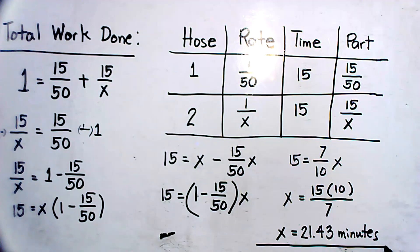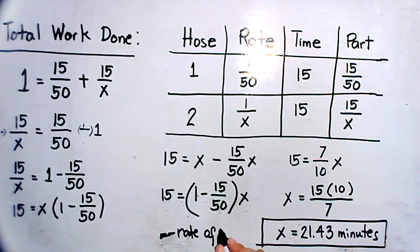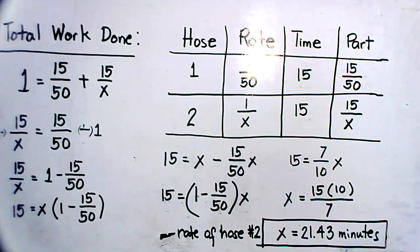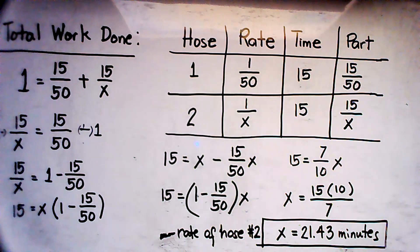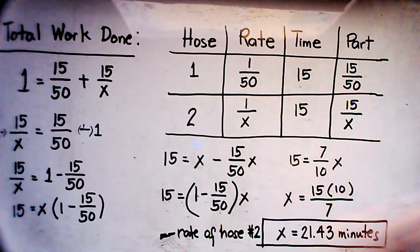Solving for x: x equals 15 times 10 over 7, which is 150 over 7, or approximately 21.43 minutes. This is our answer — hose number two can fill up the pond in approximately 21.43 minutes if it works alone. Once again, I am Dr. Ramela B. Ramirez. Thank you very much for watching and listening, and I will see you in my next video.